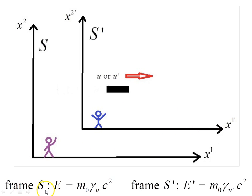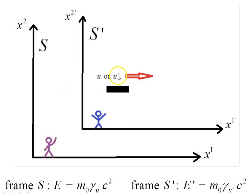In frame S, the energy of the object is m₀ times gamma_u times c squared. In frame S prime, the energy E prime is m₀ times gamma_{u'} — that's the velocity u prime relative to the observer at rest in S prime who sees this object going by with speed u prime — times c squared.